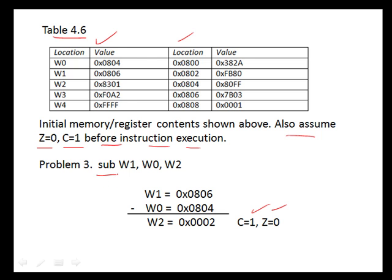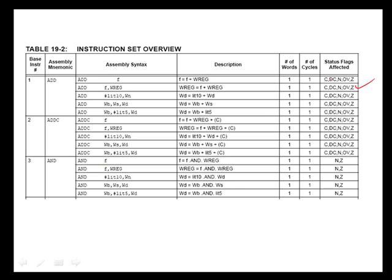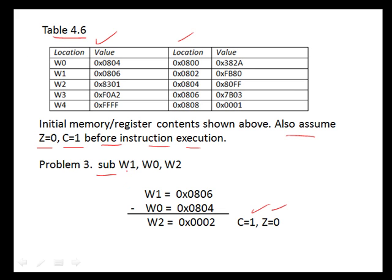Problem 3 is the subtract instruction. From the table, we see that it affects the carry flag and the zero flag. We're subtracting W0 from W1 and placing the result in W2. W1 contains 0x806 and W0 contains 0x804, so 806 minus 804 equals 2. We're subtracting a smaller number from a larger number, so there's no borrow, meaning the carry flag remains 1. The result is not zero, so the zero flag is false, or 0.